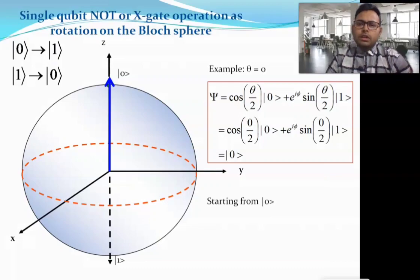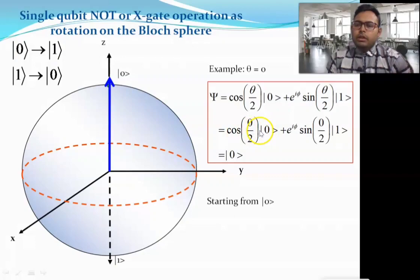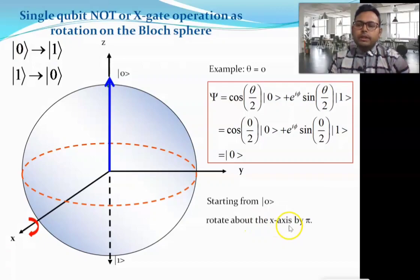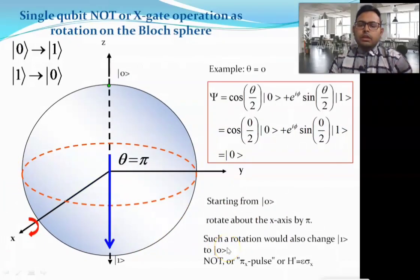Operating the X gate (NOT gate) on a qubit: if θ = 0, the cos term equals 1 and remains, but the sin term is cancelled since sin(0) = 0, giving state |0⟩. The X gate flips state |0⟩ to |1⟩ and |1⟩ to |0⟩. It performs a rotation of 180° around the x-axis, flipping the states.